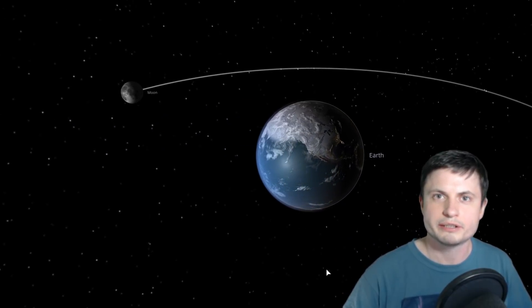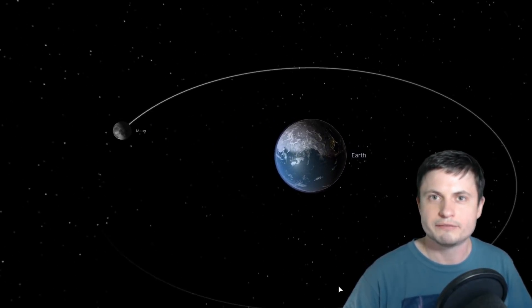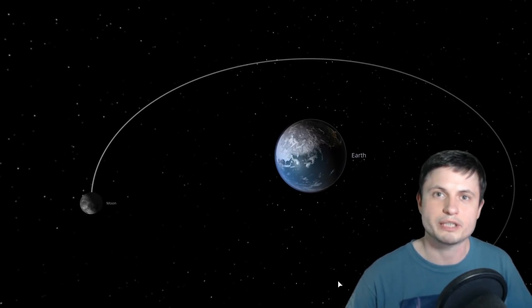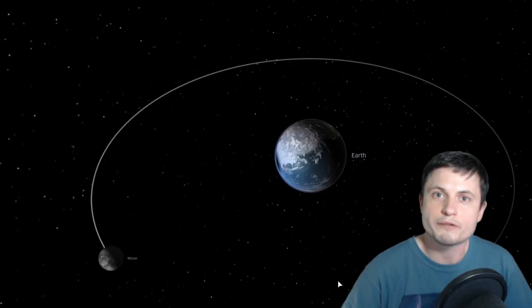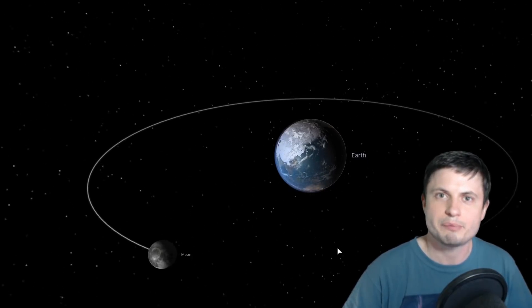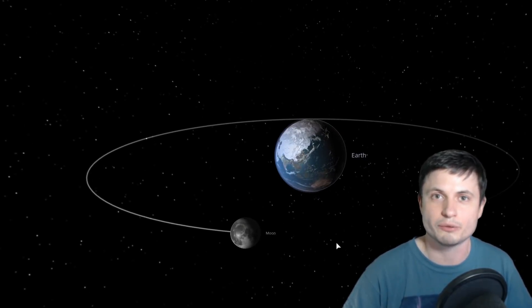For example right here in this simulation, can you actually tell if this is running forward in time or if this is running backwards? There's actually no way for us to tell because everything that's happening here could technically be going either way. But one way of identifying what the direction of time is, is by introducing the idea of entropy.